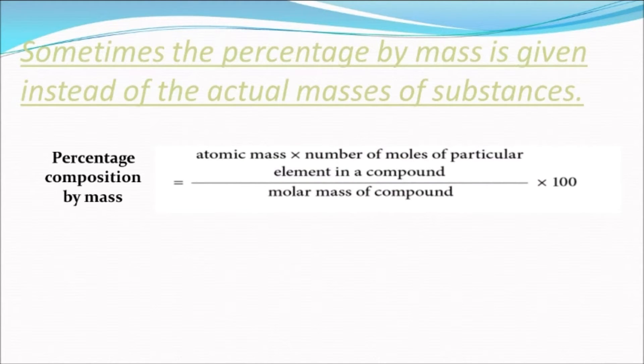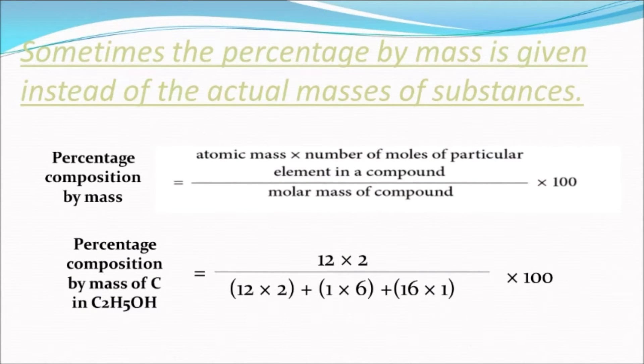For example, we want to find the percentage by mass of carbon in ethanol. This is simply the mass of carbon over the total mass multiplied by 100. Therefore, it is 12 multiplied by 2 over 46 multiplied by 100.